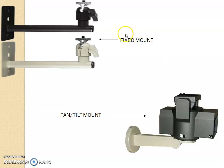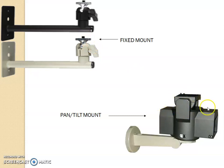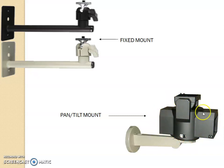Here you see a fixed mount — you just fix it like a tripod where you are attaching the camera. Whereas the pan-tilt mount is capable of revolving and also capable of tilting.